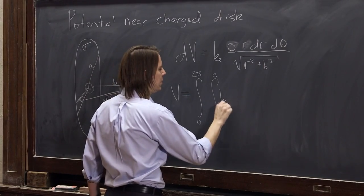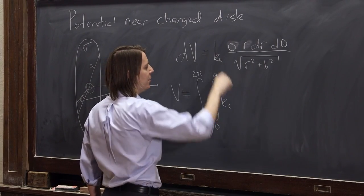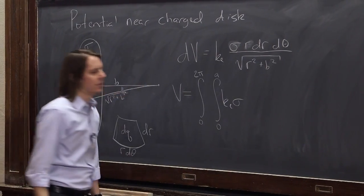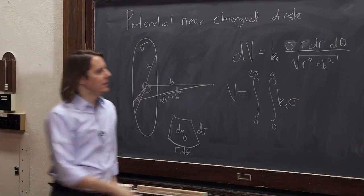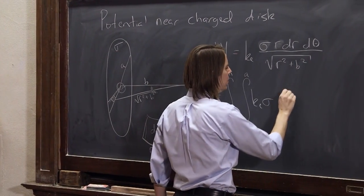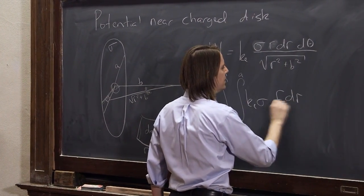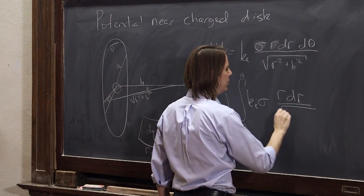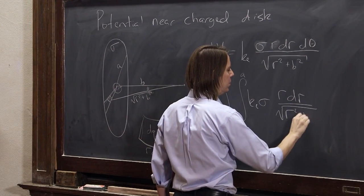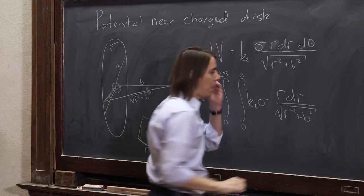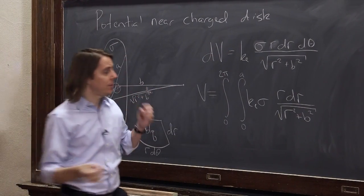Let's keep the ke in here. Ke and the sigma. Put the sigma right there. And then let's put all the r parts together. r dr times the square root of r squared plus b squared. And then the only theta part is just d theta.